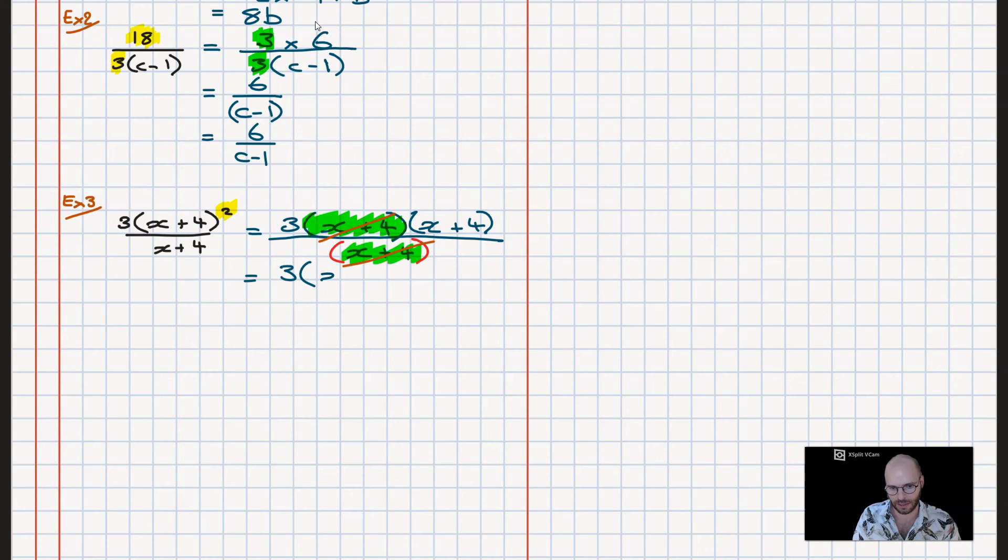And what that means is we can say goodbye to those. Writing that out, we ignore what we had highlighted in green, that's all over 1, and therefore it simplifies out to be 3 times x plus 4.